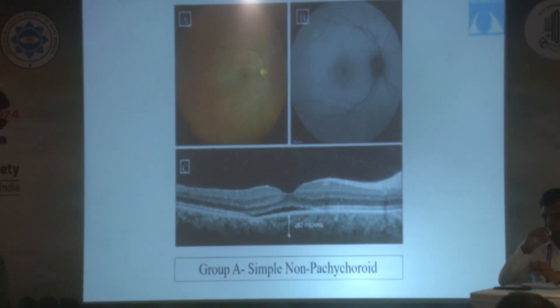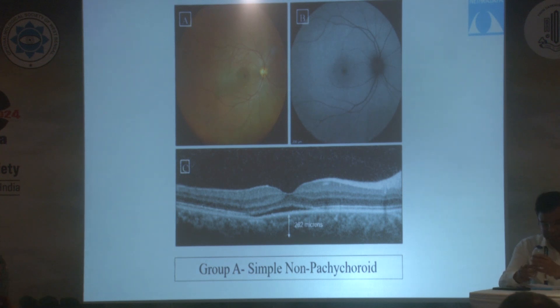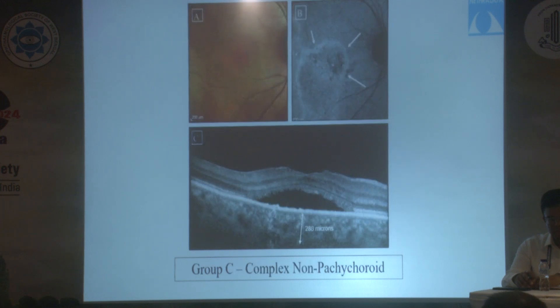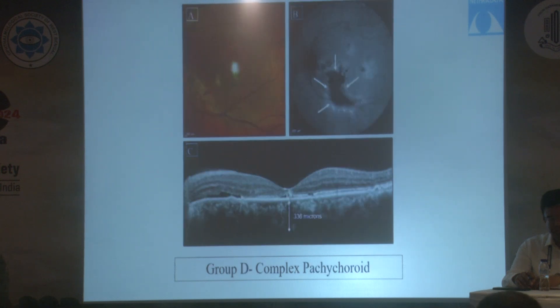Combining these, we suggested four groups: Group A — simple non-pachycoroid — with less than 2 disc diameters of RPE involvement and SFCT less than 300 microns; Group B — simple pachycoroid — less than 2 disc diameters RPE involvement with SFCT more than 300; Group C — complex non-pachycoroid — more than 2 disc diameters RPE involvement with SFCT less than 300; and Group D — complex pachycoroid — more than 2 disc diameters RPE involvement and SFCT more than 300.